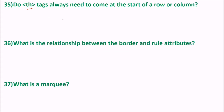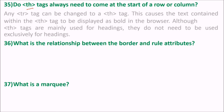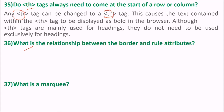Does the TH tag always need to come at the start of a row or column? A TR can easily be changed to a TH tag. TR is table row, TH is table heading. This causes the text contained within the TH tag to be displayed as bold in the browser. Although TH tags are mainly used for headings, they do not need to be used exclusively for headings.